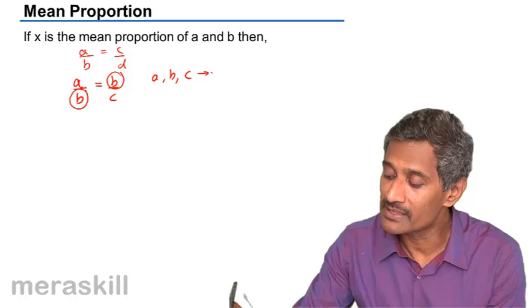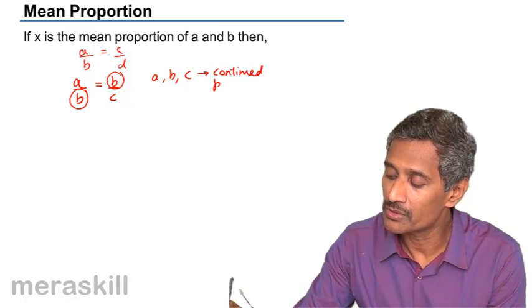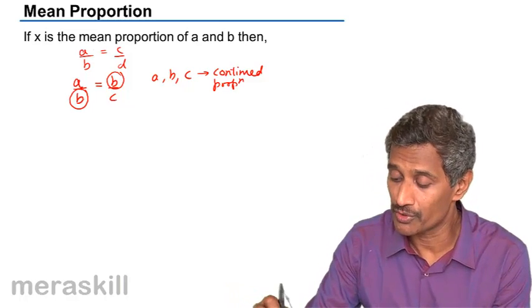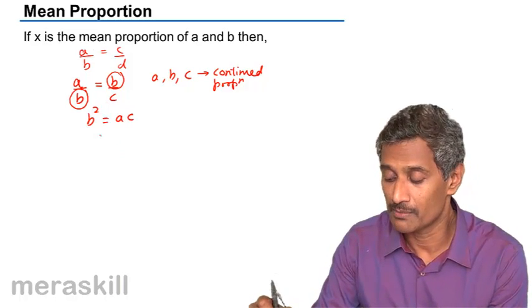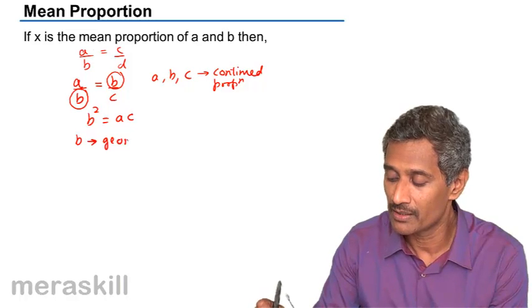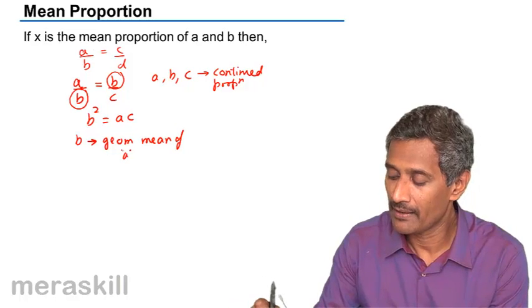In such a case, we say that they are in continued proportion. We say A, B, C are in continued proportion, which also means that B squared is equal to AC if you cross multiply. Now, in that case, we say B is the geometric mean of A and C.